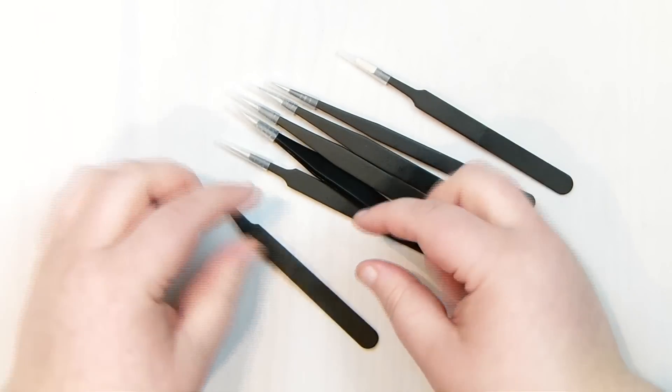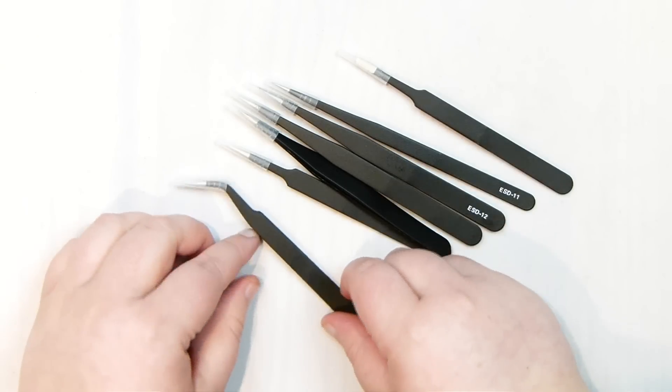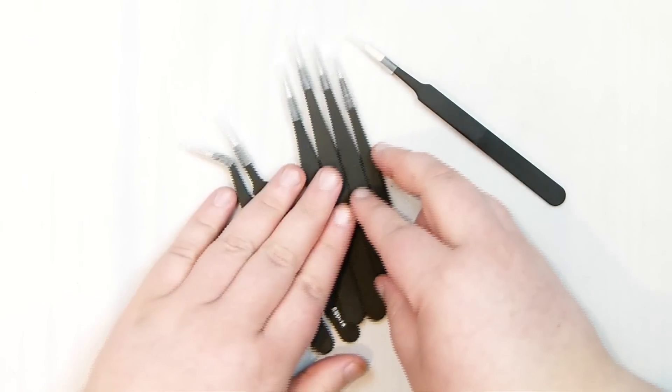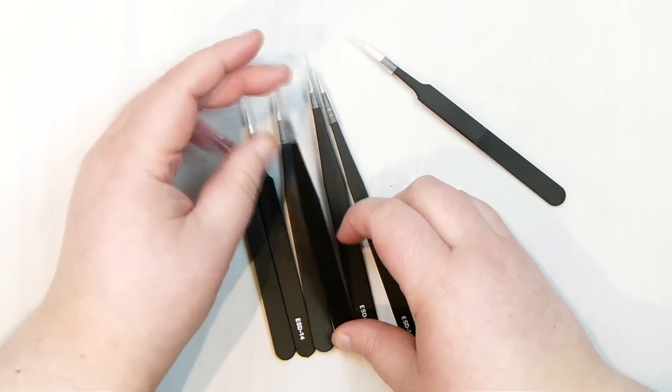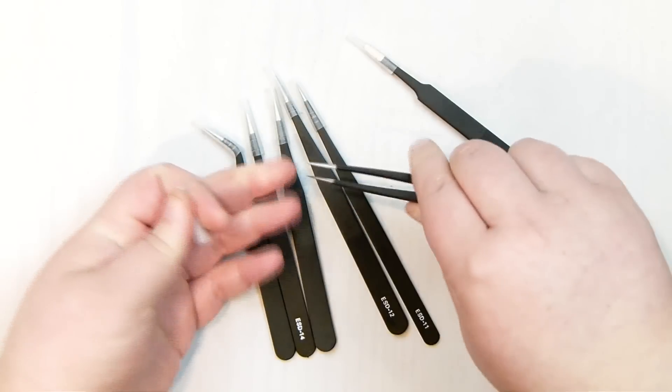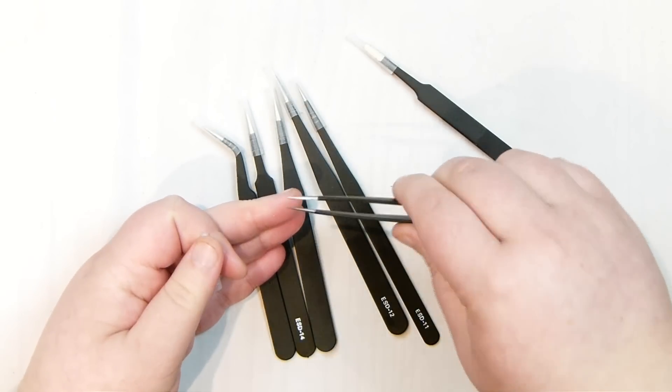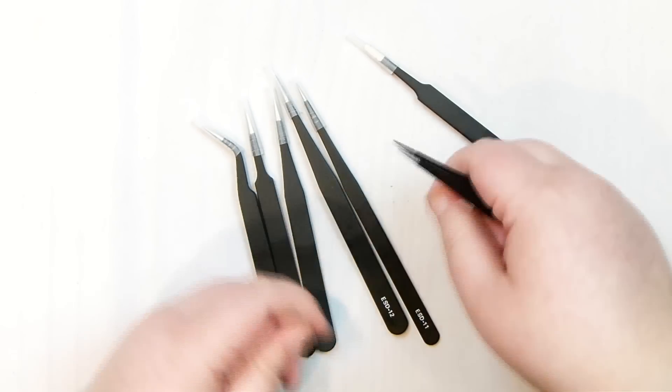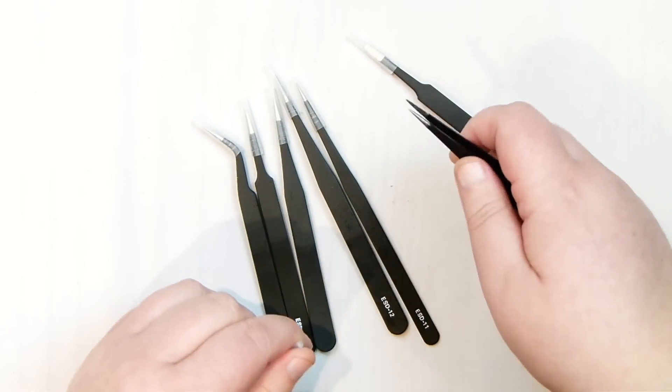Especially if it's micro-macrame, because obviously the thread or cord is quite fine. And then having some tweezers like this, especially with a fine tip to them, it can just help get in where you've made your knot and try to undo a certain knot. Because obviously, when you've done your knots, it gets quite tight as well.